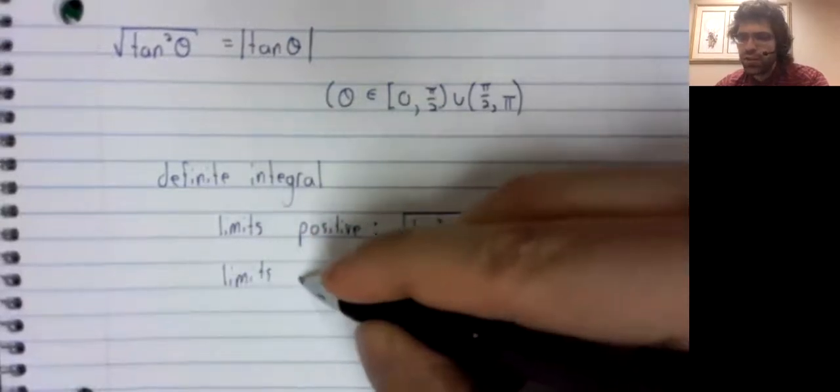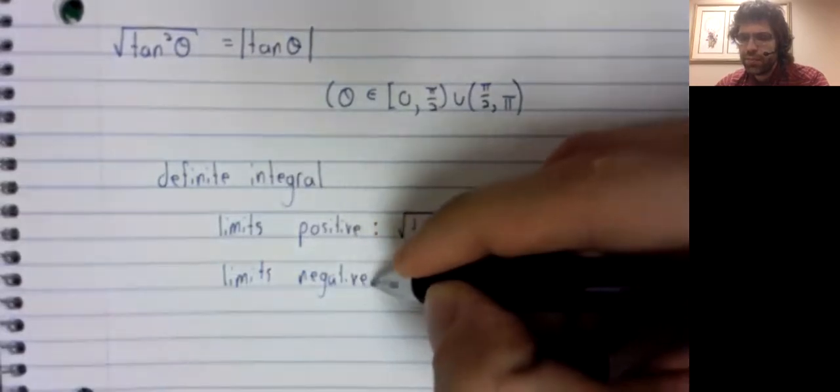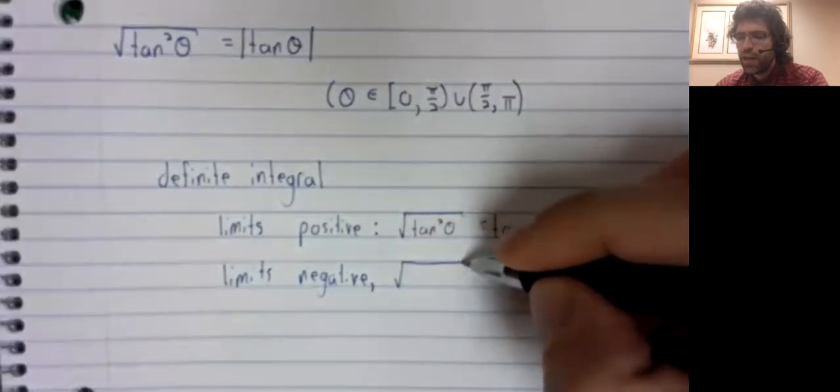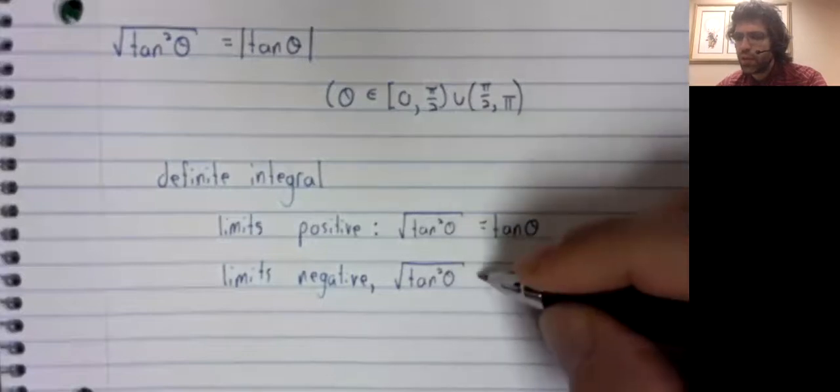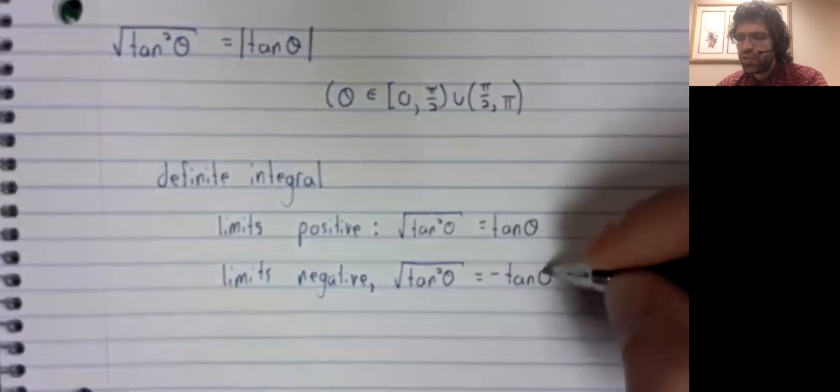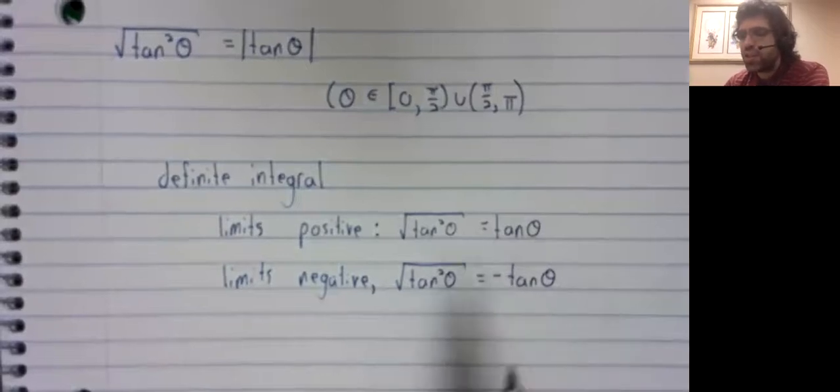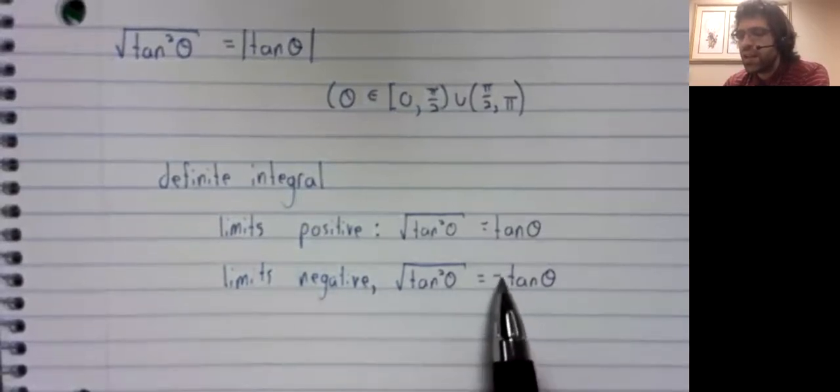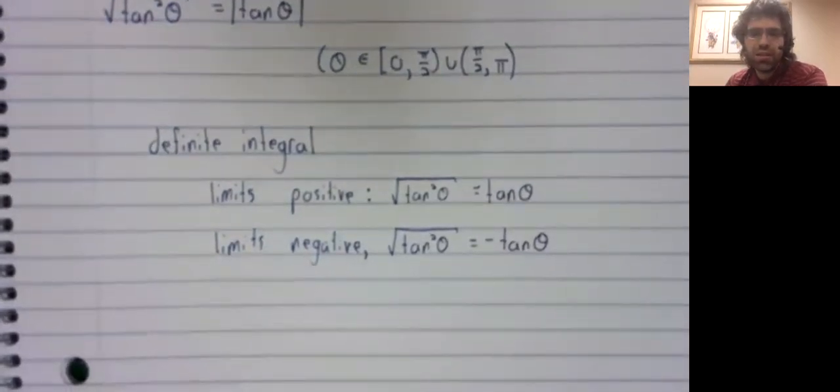If our limits are negative, then the square root of the tangent squared is the negative tangent. In other words, it's the absolute value of the tangent. Take something that's negative, throw an absolute value here to make it positive.